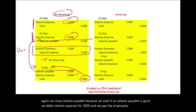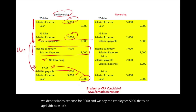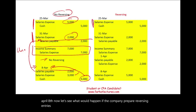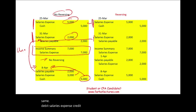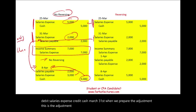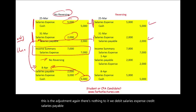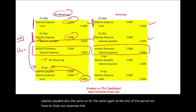Now let's see what would happen if the company prepared reversing entries. On March 25th there's nothing different — debit salaries expense, credit cash. March 31st adjusting entry is the same: debit salaries expense, credit salaries payable. Closing entries at the end of the period are also the same. So everything so far is the same — so what do we do differently with reversing?